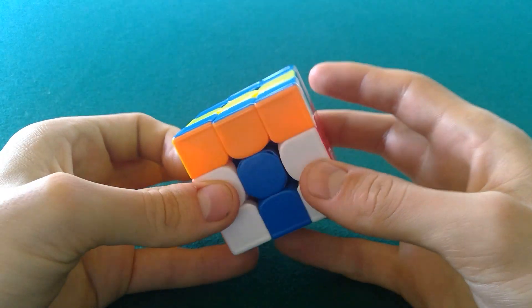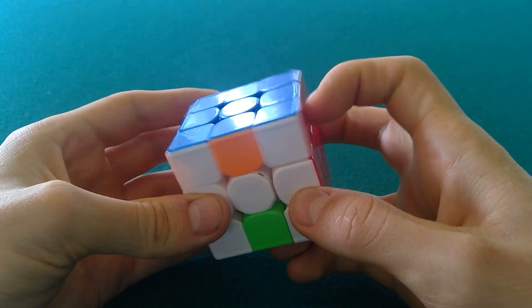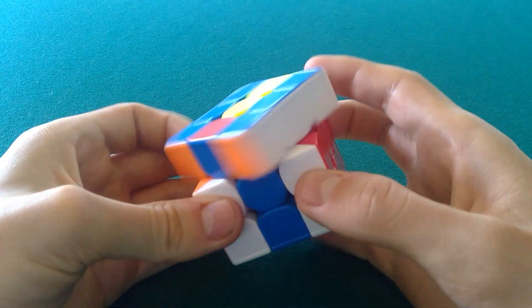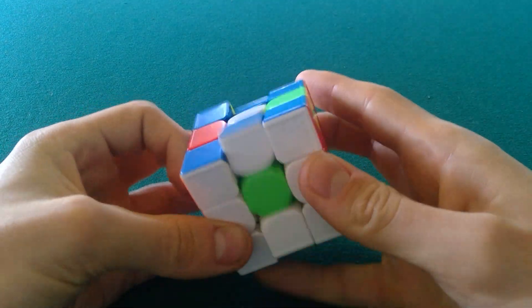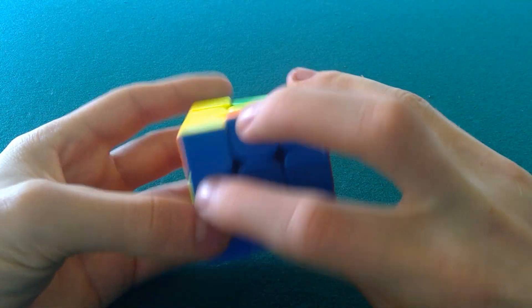But the great thing about this one is that it's super easy to cancel. You can mirror it just by changing the direction of the U moves and change the direction of the M moves, and you can do it to the back.